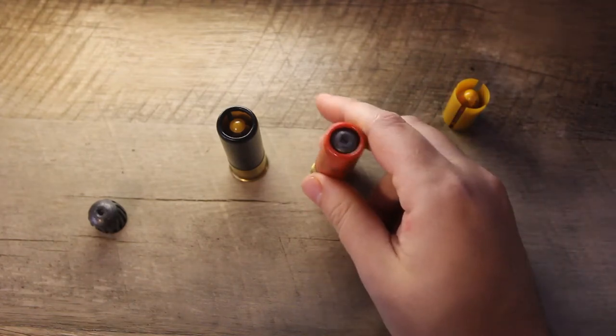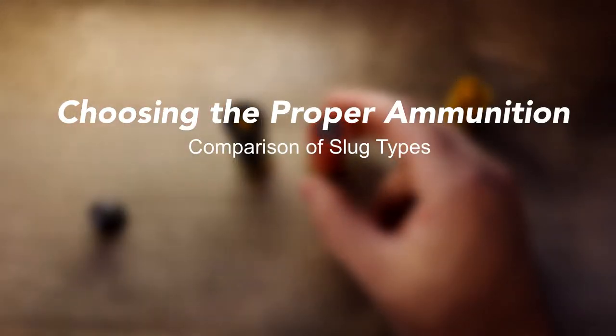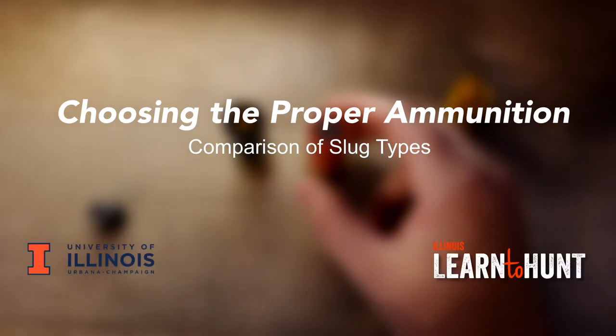When we're talking about deer hunting with a shotgun, you are going to be using a slug, and a slug is essentially a bullet for a shotgun.